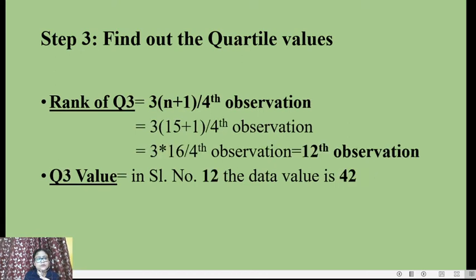Next, we find the rank of Q3 = 3(n + 1) / 4. With n = 15: 3 × (15 + 1) / 4 = 3 × 16 / 4 = the 12th observation. In the data arranged in ascending order, at serial number 12, the value is 42. So Q3 = 42.